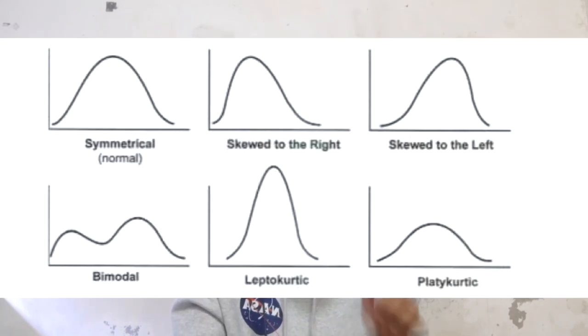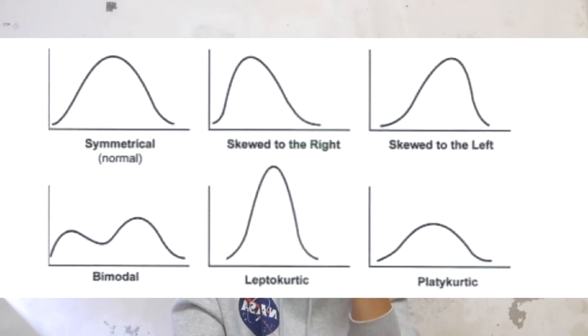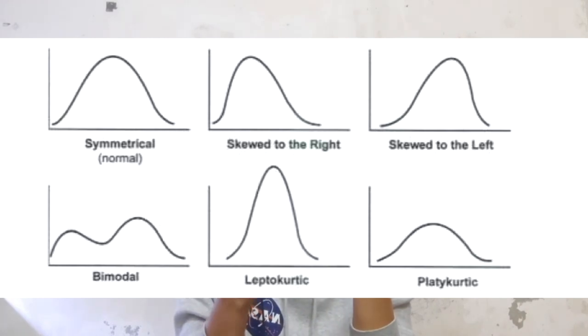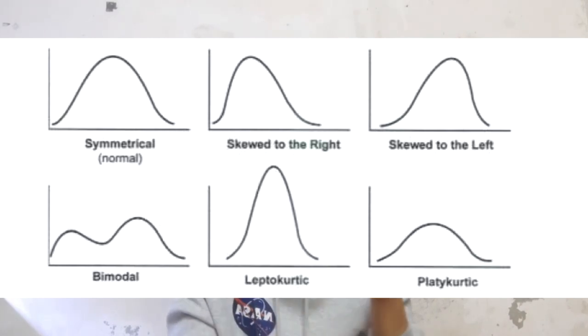Histogram distribution shapes can be classified into several types, including: symmetrical, skewed to the left, skewed to the right, leptokurtic, platykurtic, bimodal, and multimodal.